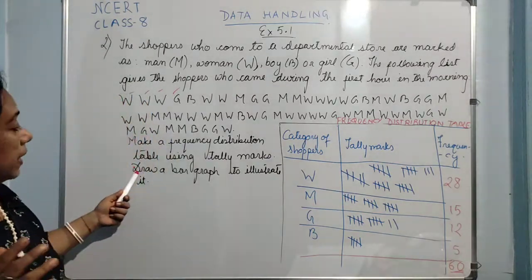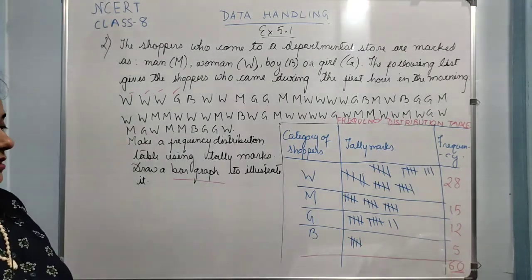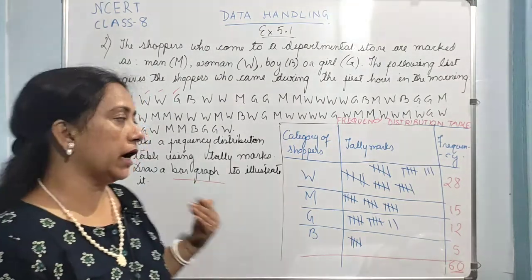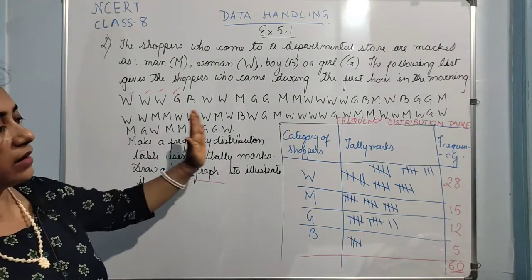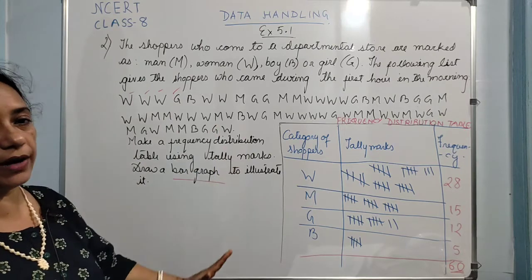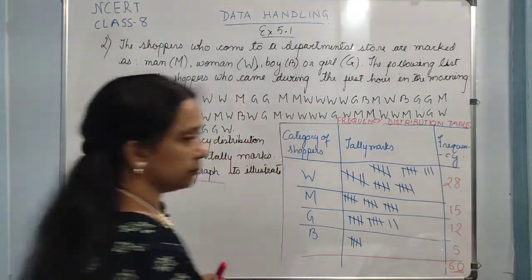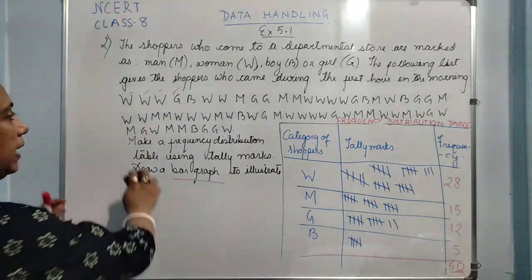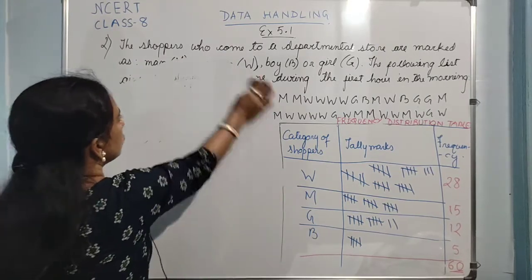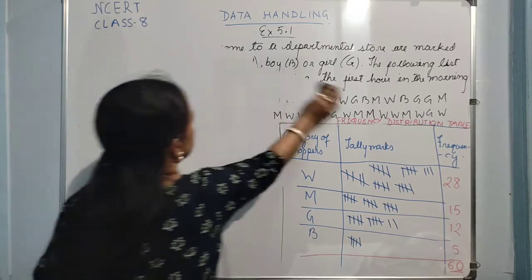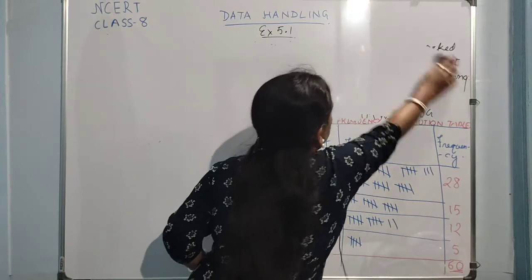The second part is to draw a bar graph to illustrate it. All of you know what a bar graph is. In a bar graph what we do is the graphical representation of data using bars which are at a fixed distance between each other. The height of the bars gives you the frequency of the particular data.